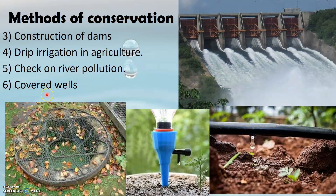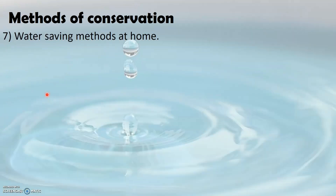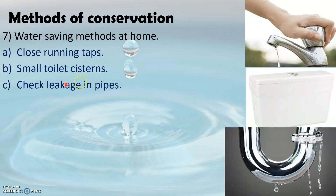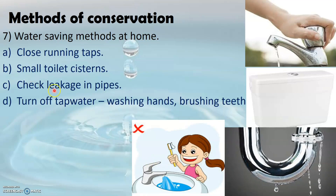In addition to these methods, there are other ways we can follow at home to prevent wastage of water — such as closing running taps, using small toilet cisterns, and keeping a check on leakage in household pipes. Another important thing is to turn off the tap while washing hands and brushing teeth. Some of us have a tendency to keep the tap running even when we don't require water — this should be avoided. Turn the tap on only when you need water, and by doing so you can prevent wastage of water.